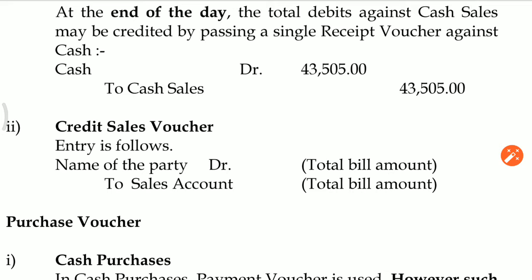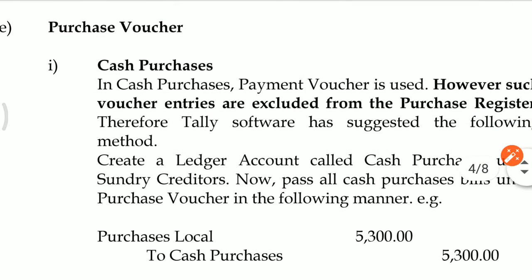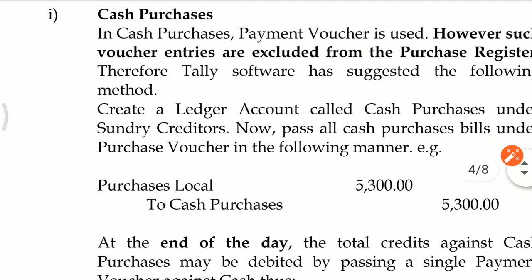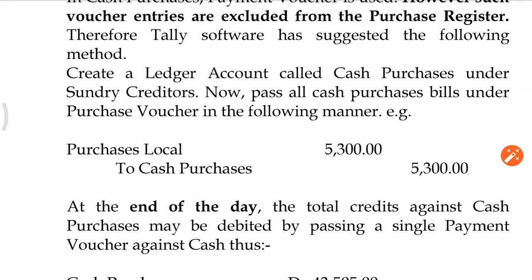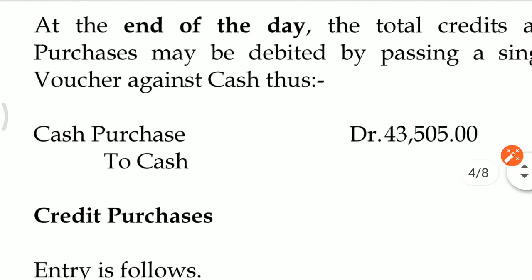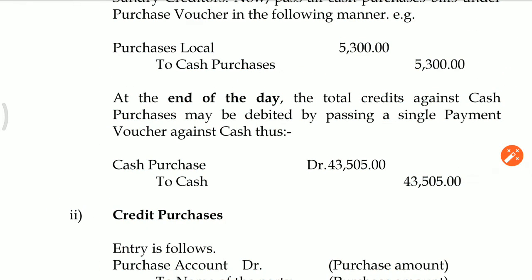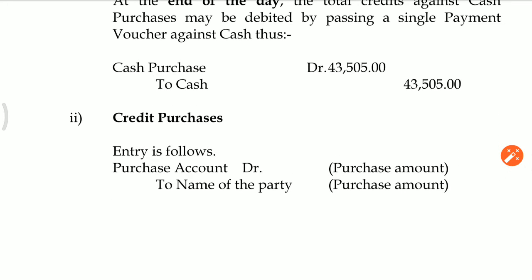For credit sales, you simply book the entry: Debtor's Account or Customer Account Debit to Sales Account. Next is Purchase Voucher — similar concept to Sales Voucher. In the case of cash purchase, you have to create a Cash Purchase ledger in Sundry Creditors. Whenever you want to book cash purchases, first select Purchase Voucher and book this entry: Purchase Local Account Debit to Cash Purchases. At the day end when you make the payment, entry will be Cash Purchase to Cash Account, and cash purchase ledger account will be zero. For credit purchase, entry will be Purchase Account Debit to Supplier Account.